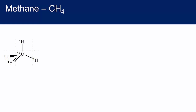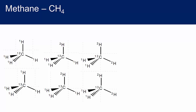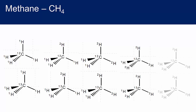We could have a methane molecule with carbon-12 and four protium atoms. Alternatively, an isotopologue with carbon-13 and four protium atoms. We could have carbon-12 with three protium and one deuterium, or carbon-13 with three protium and one deuterium. We could have carbon-12 with two protiums and two deuteriums, or carbon-13 with two protiums and two deuteriums. Or carbon-12 with three deuteriums and one protium, or carbon-13 with three deuteriums and one protium. Or carbon-12 with four deuteriums, or carbon-13 with four deuterium atoms.